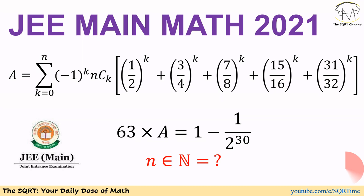If we name the whole expression as A, and we know that 63 times A is equal to 1 minus 1 over 2 to the power of t, then we are supposed to find the value of n belonging to the natural numbers. Before moving forward to the solution, make sure you pause the video to think about this problem.